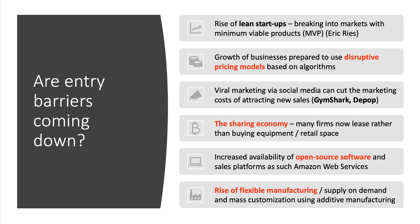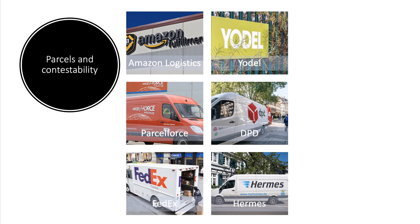A lot of businesses rely heavily on open source software, which is freely available, to build an app and develop a payment system. Increasingly we're also seeing the rise of flexible manufacturing, where businesses use things like 3D printers. The rise of self-publishing is a good example — to break into the publishing market, just be flexible, be low cost, be lean, and see where it gets you. So perhaps the entry barriers are coming down.